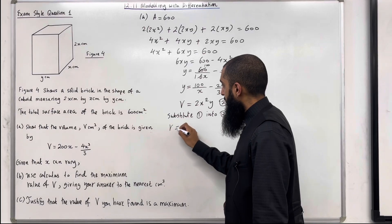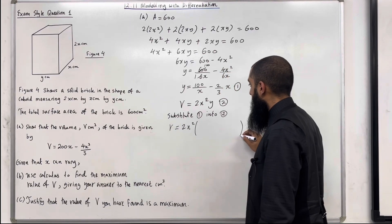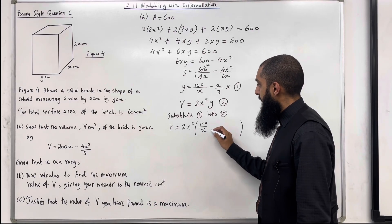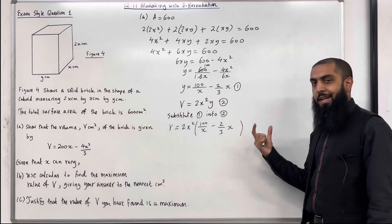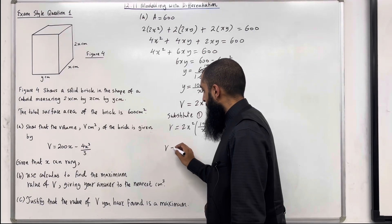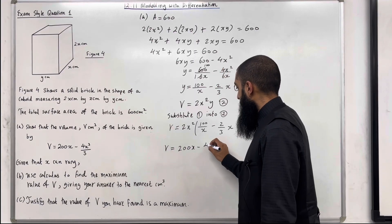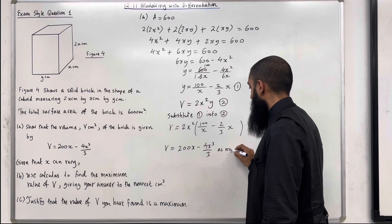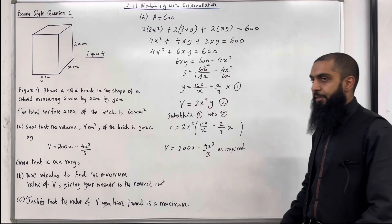So the volume equals 2x squared multiplied by y, which is 100 over x minus 2 over 3 times x. Expanding and simplifying this, I therefore get the result: v equals 200x minus 4x cubed over 3, as required. That completes Part A of the question.